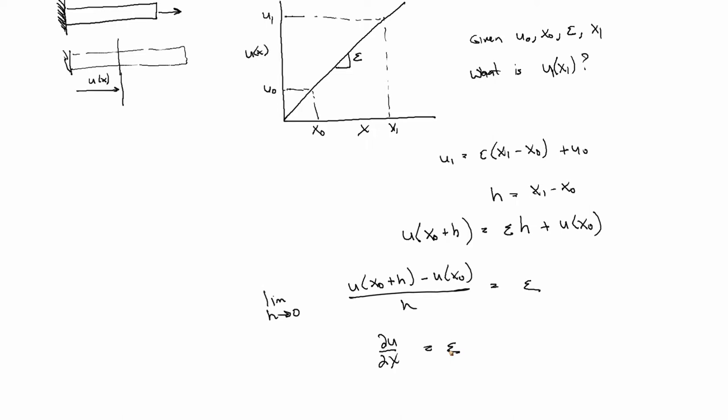So then if we just go back to our conservation of momentum, again in 1D, we had the second time derivative of u is equal to, in 1D, the divergence is just equal to partial partial x of the stress, right?